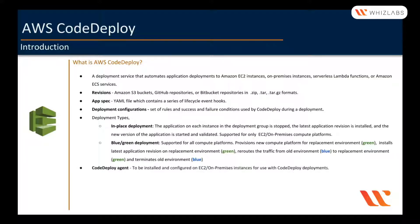The CodeDeploy agent is a software package which needs to be installed and configured on EC2 instances or on-premise servers in order to be detected by a CodeDeploy deployment. Remember, if you do not install this on the instances, CodeDeploy cannot find the instances and deployment will not happen. Also remember, the agent is not required for deployments that use Amazon ECS or AWS Lambda compute platforms — this is only applicable for EC2 and on-premise instances.